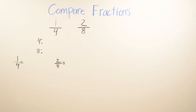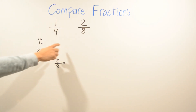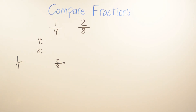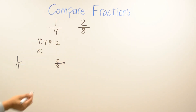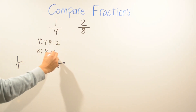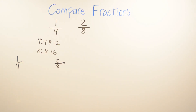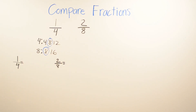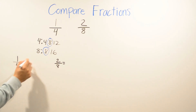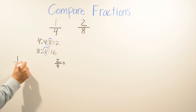Don't forget to subscribe and like the video! In this example we have one fourth and two eighths. Same thing — we find the LCM of the denominators. Starting with four: four, eight, twelve. Starting with eight: eight, sixteen. I can stop right away because I see eight appears in both lists.